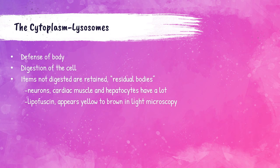Lysosomes are organelles that are part of the body's defensive mechanisms and serve as a means of digesting nutrients taken into the cell. The lysosome surrounds digestible material, the membranes fuse, and the contents mix together. Anything not digested is retained and referred to as residual bodies. Cells like neurons, cardiac muscle, and liver cells — hepatocytes — tend to accumulate large amounts of these residual bodies, called lipofuscin, which appear yellow to brown under a light microscope.